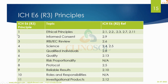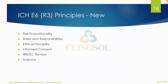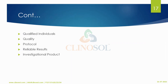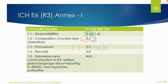E6 R3 will have 11 principles instead of 13. The new principles added are risk proportionality and roles and responsibility. Existing principles being modified include ethical principles, informed consent, IRB/IEC review, science, qualified individual, quality, protocol, reliable results, and investigational product.